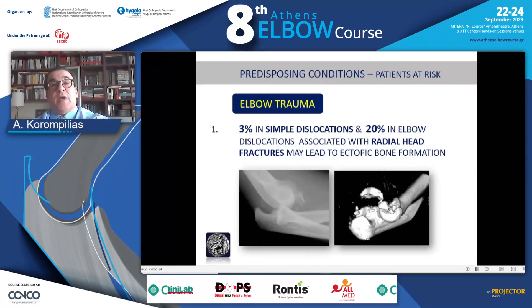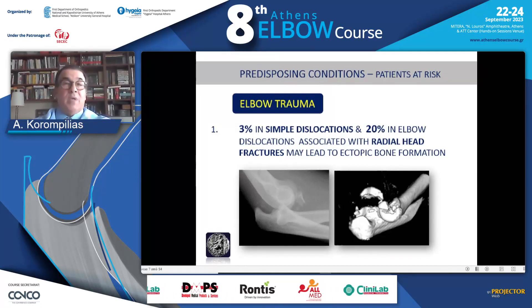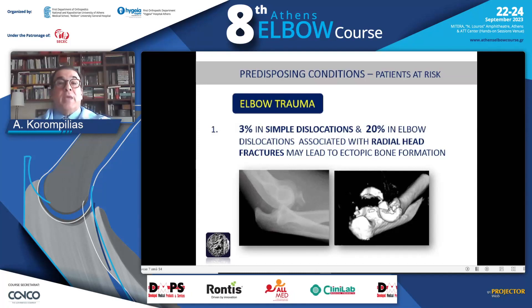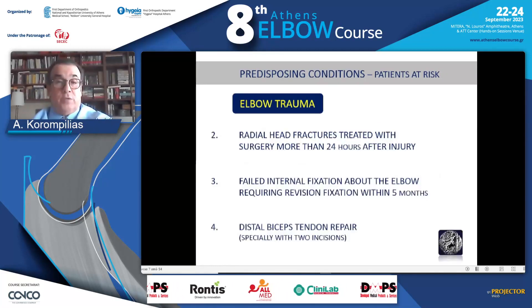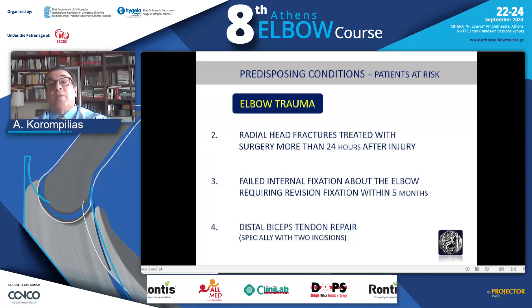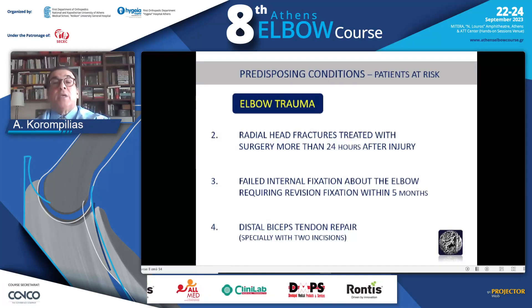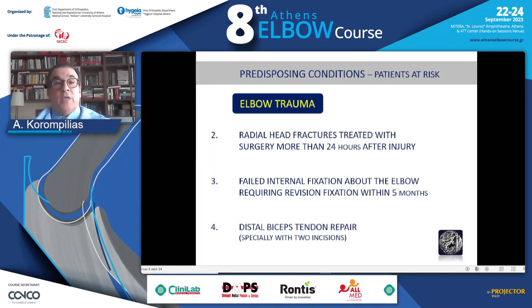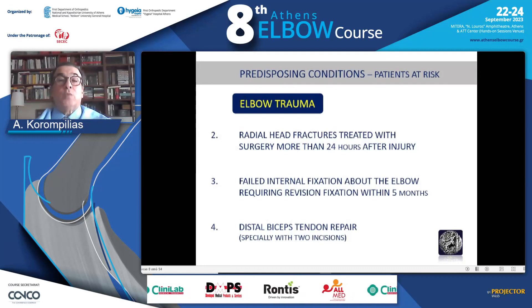Looking at predisposing factors for elbow heterotopic ossification: elbow trauma accounts for about 30% in simple dislocation, rising to almost 20% when elbow dislocation is associated with fractures. We should remember that fractures treated surgically more than 24 hours after injury, revision of failed elbow techniques within two months, or older methods like the two-incision approach for distal biceps tendon repair are all situations that predispose to heterotopic ossification.